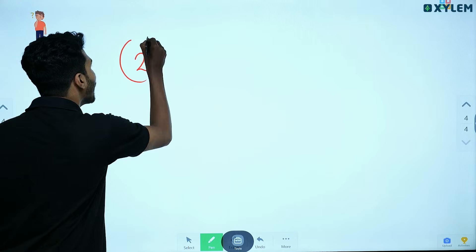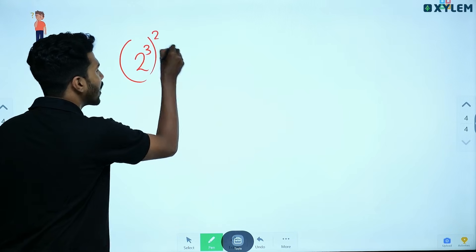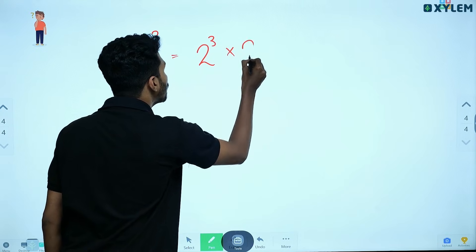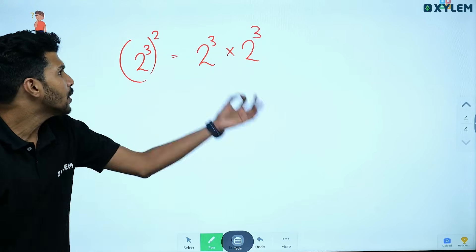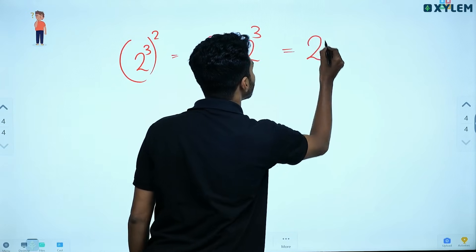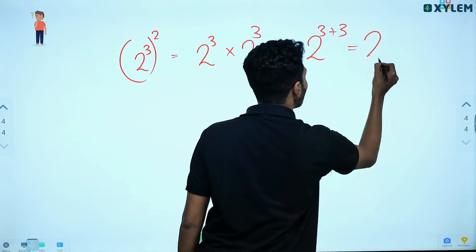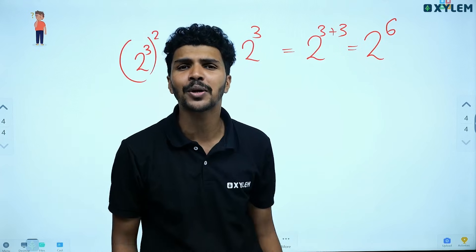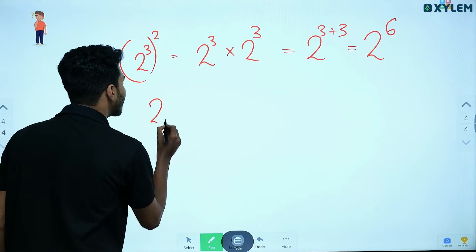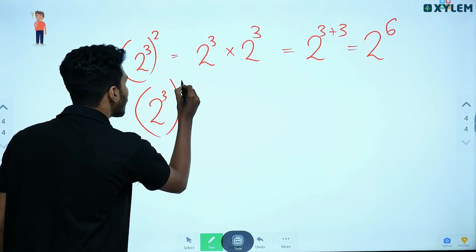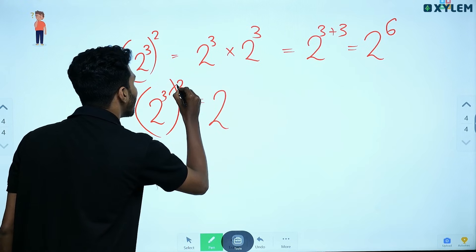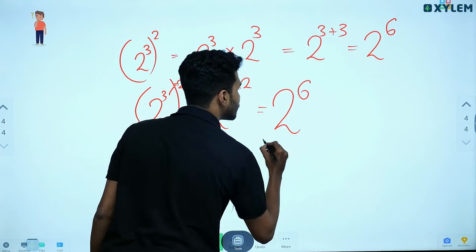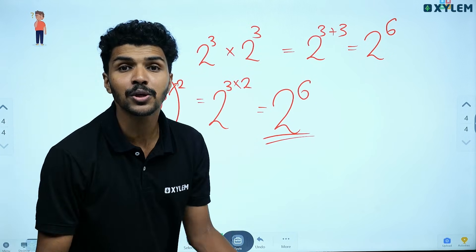Now, the power of a power. 2 cubed, all raised to 2. This is not just addition — you multiply the exponents. 2 raised to 3, all raised to 2, means you multiply 3 into 2. That is equal to 2 raised to 6.